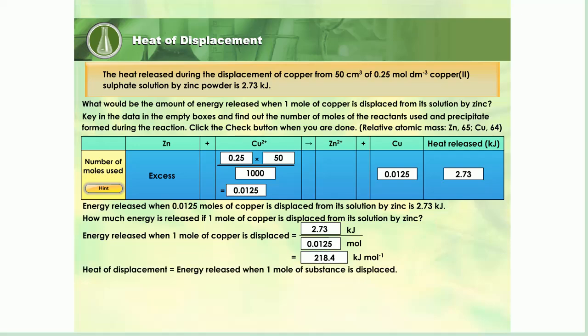The energy released when one mole of substance is displaced is called the heat of displacement. Thus, we can say that the heat of displacement of copper from its solution by zinc is negative 218.4 kilojoules per mole.